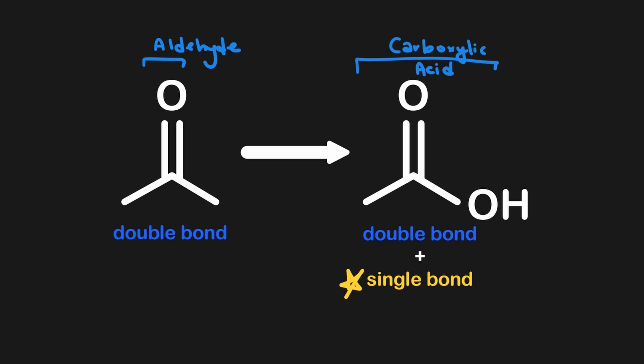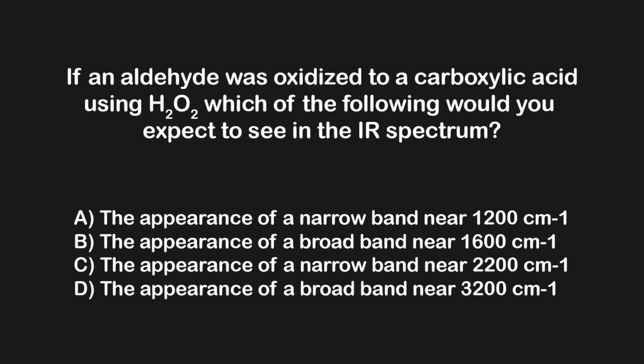This means the carboxylic acid should have an extra stretch corresponding to its OH bond. Since there is a single bond between the oxygen and hydrogen, we would expect to see a new stretch arise in the 4,000 to 2,500 region since that is the single bond region on an IR spectrum. Therefore, answer choice D must be correct.